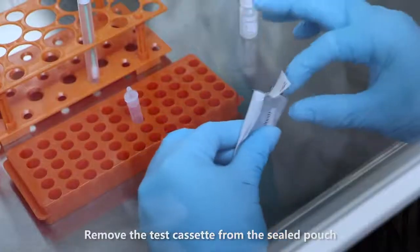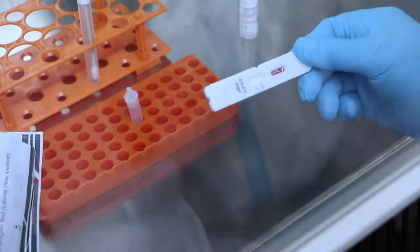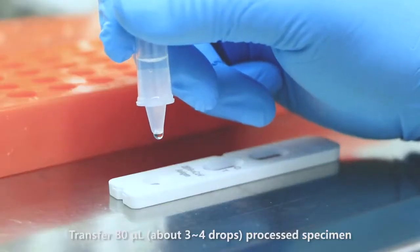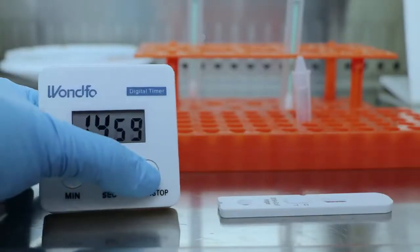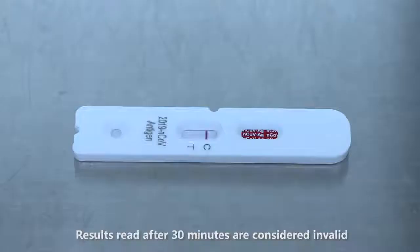Remove the test cassette from the sealed pouch and place it on a level surface. Transfer 80 microliters, about 3 to 4 drops, processed specimen to the sample well and start the timer. Read the result at 15 to 20 minutes. Results read after 30 minutes are considered invalid.